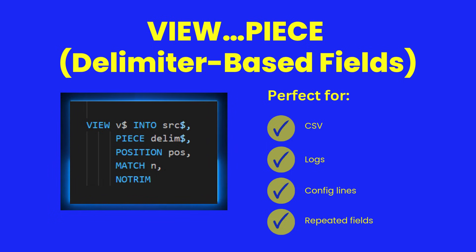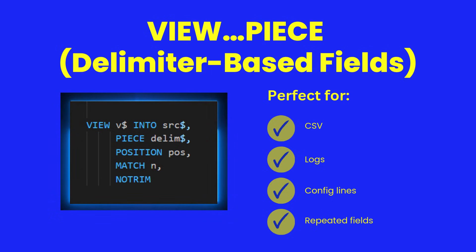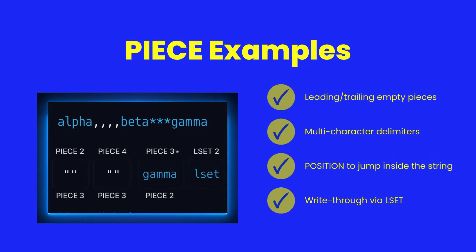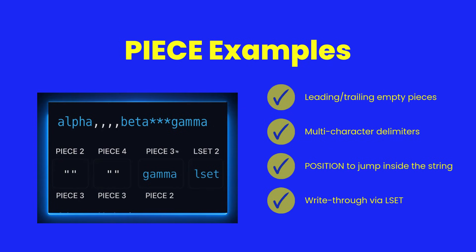View.piece is the live version of piece function. It divides the string into pieces based on a delimiter and lets you reference any piece as a zero-copy view. This is exceptionally fast for CSV parsing, log analysis, and field extraction in business applications, since no new strings are ever allocated. This slide shows several advanced piece behaviors: empty fields created by consecutive delimiters, multi-character delimiters, positional scanning, and write-through modifications. Every match yields a live reference to a piece of the original string, never a copy.